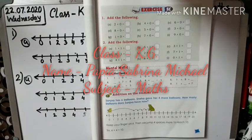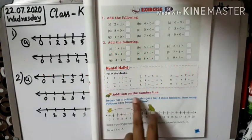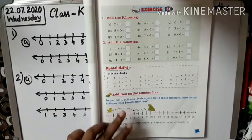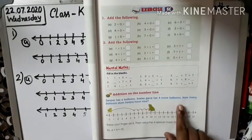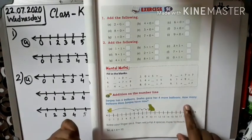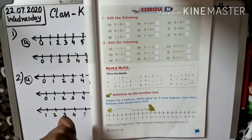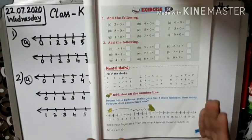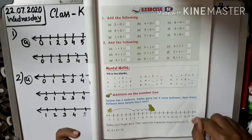Children, take out page number 71. Addition on the number line. See, Sanjana has 6 balloons. Sneha gave her 4 more balloons. How many balloons does Sanjana have now? Jump. Keep your finger on 6. Then we jump 4 spaces more to reach 10.